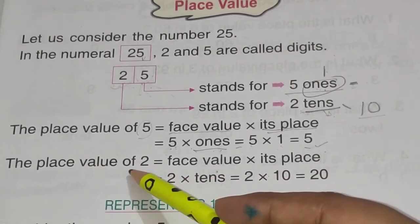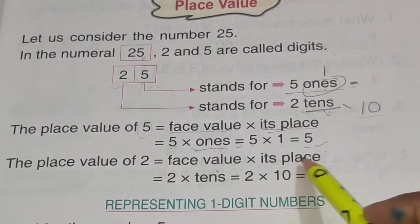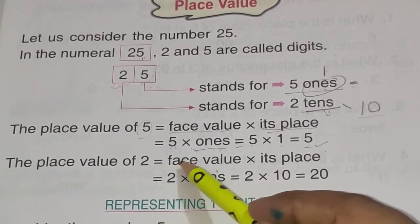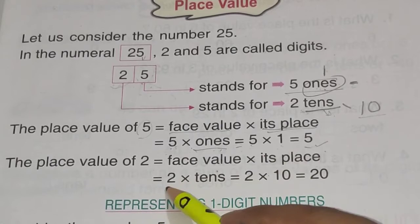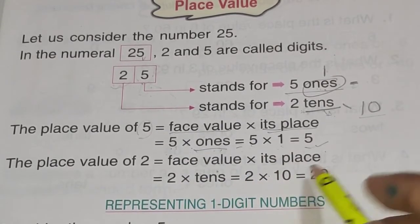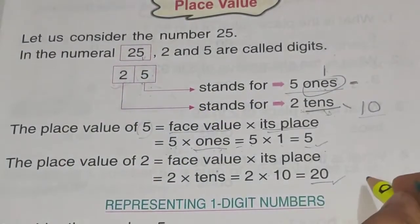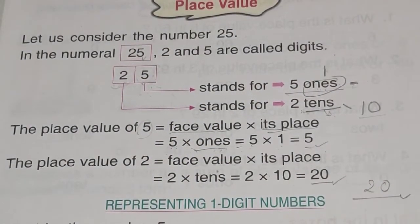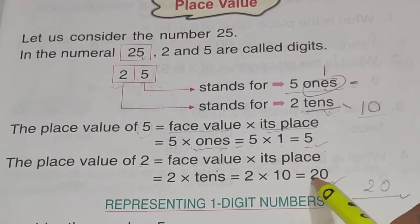Now the place value of 2 that is equal to face value into its place. 2 ki place value hai? 2. Aur uski place kaun si hai? Tens. So 2 into tens that is equal to 2 into 10. So it is 20. Agar tens ki place pe hai number to woh 20 ho gaya. Ye aapko samaj me aana chahiye kaise 2 ki place value 20 hogi.